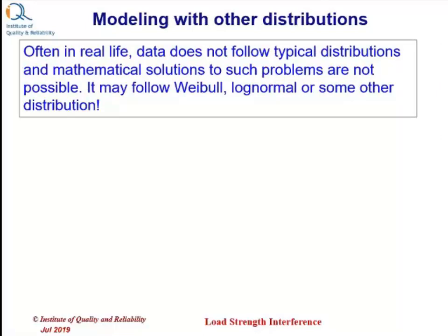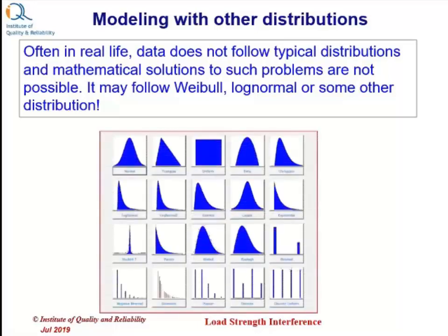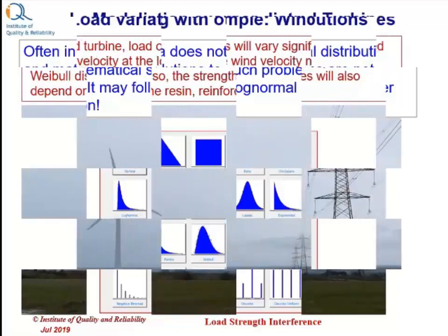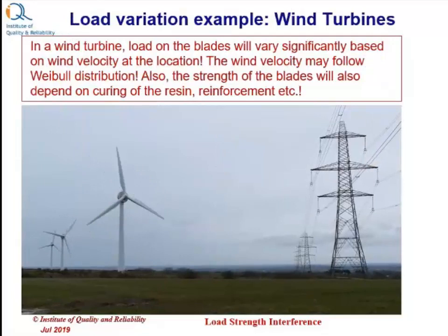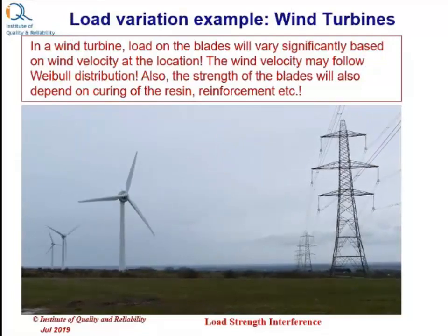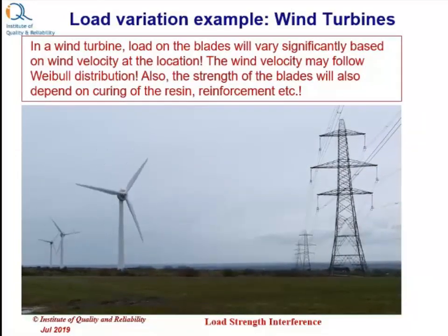So, we need to use other distribution models. The other distributions include log normal, Weibull and many other distributions. These can be modeled using software such as Simular, as we will see in the later part of this video. In wind turbines, the load on the blades will vary significantly based on the wind velocity at that location.